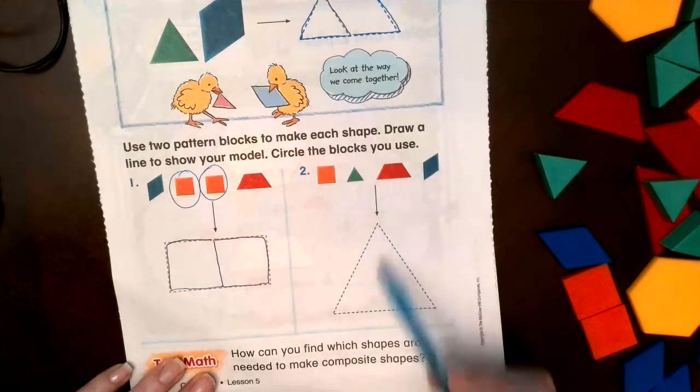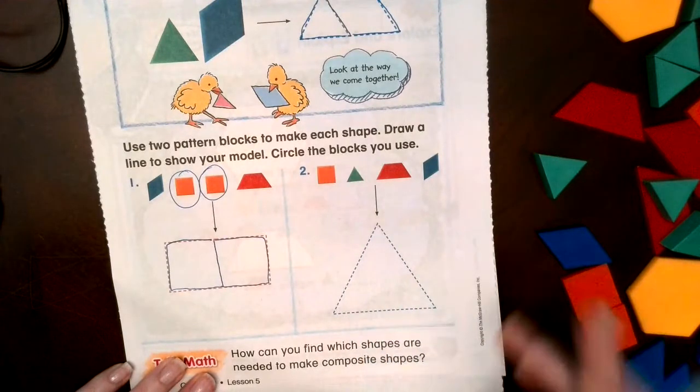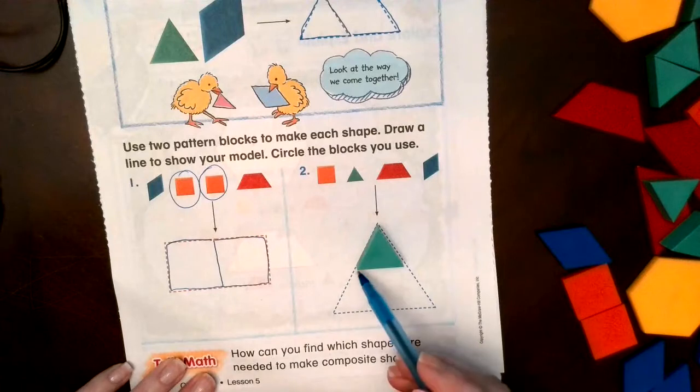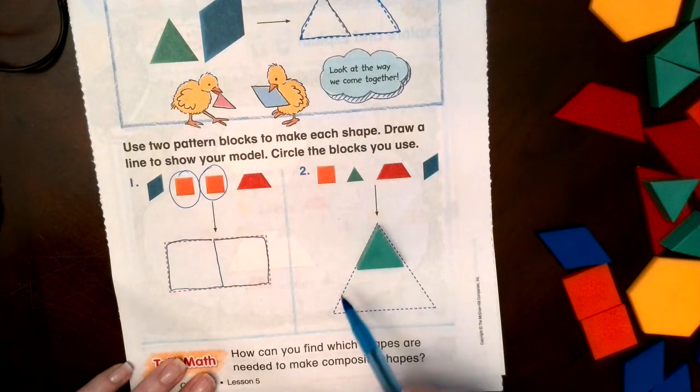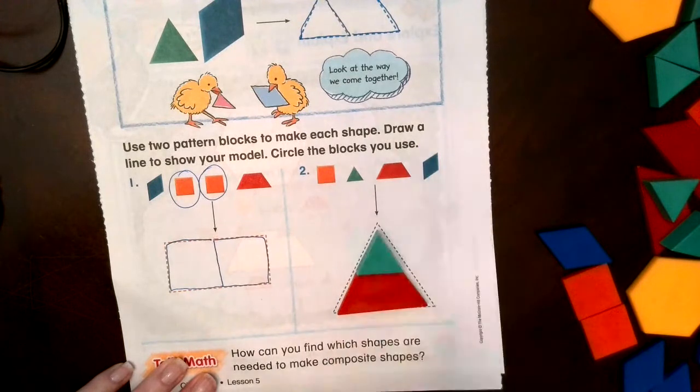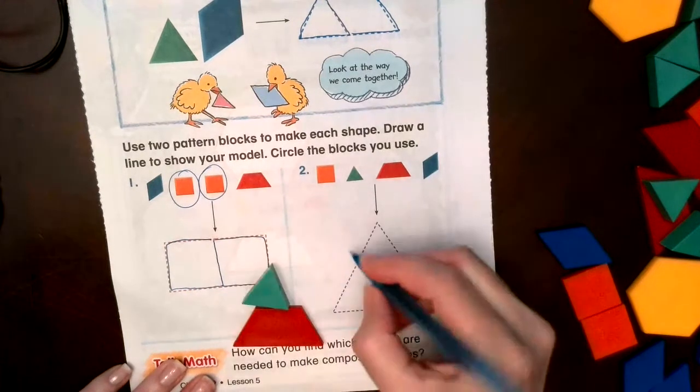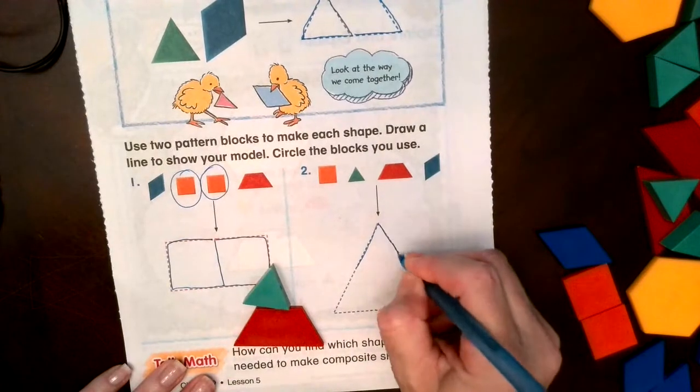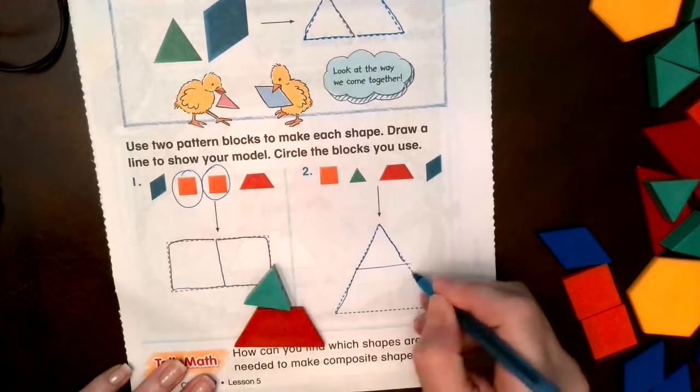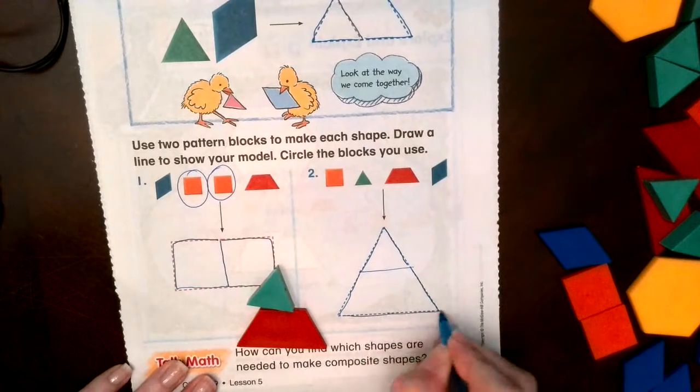Number two, we want to use these shapes to try and make a large triangle. Let's see, you can start with this. Oh, do you see the shape here? What shape is that? It can look like this. That's pretty cool, right? So let's see, we need a triangle up here. I'm gonna draw the line.